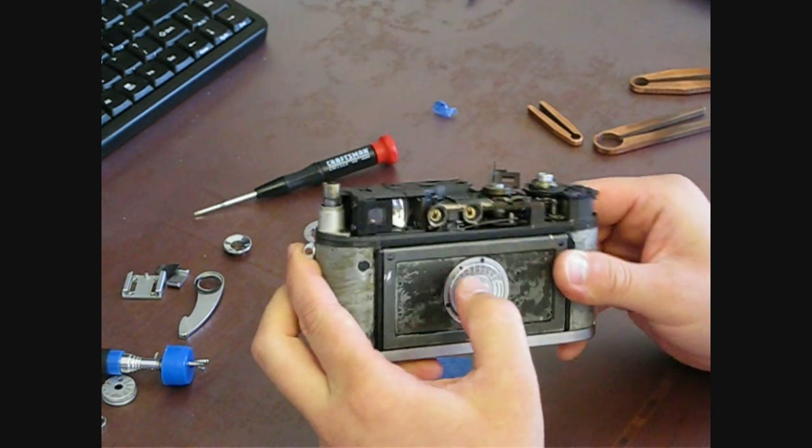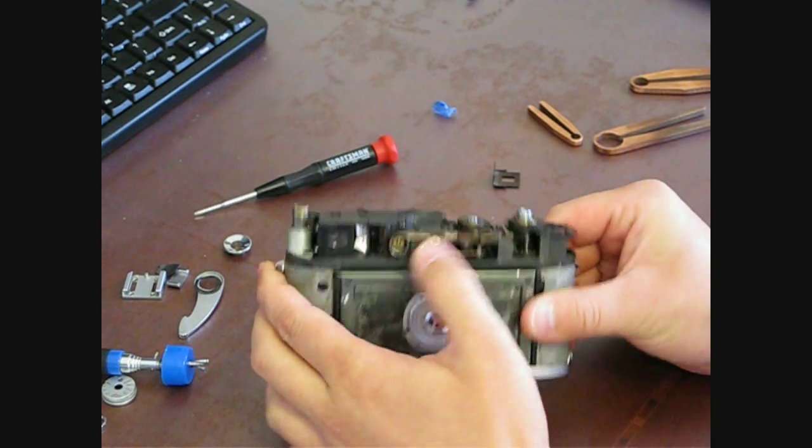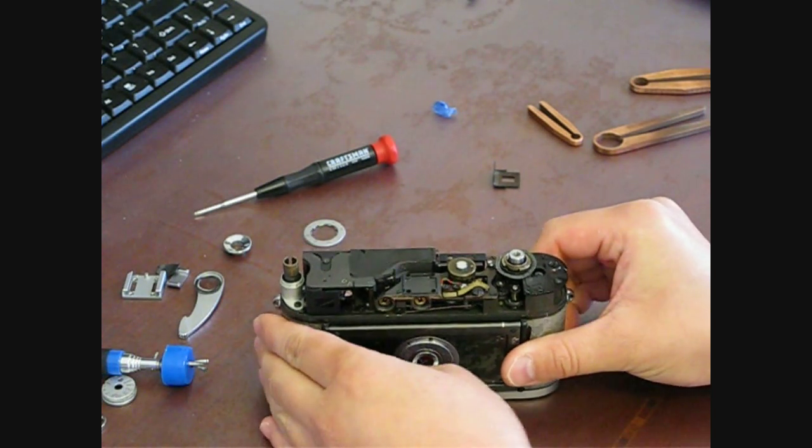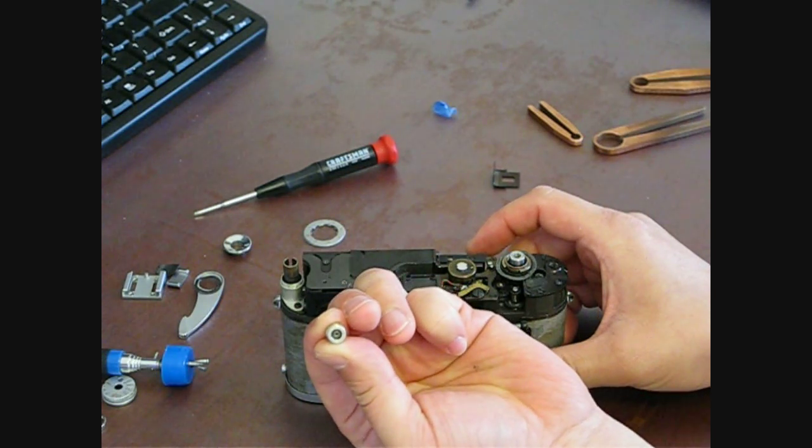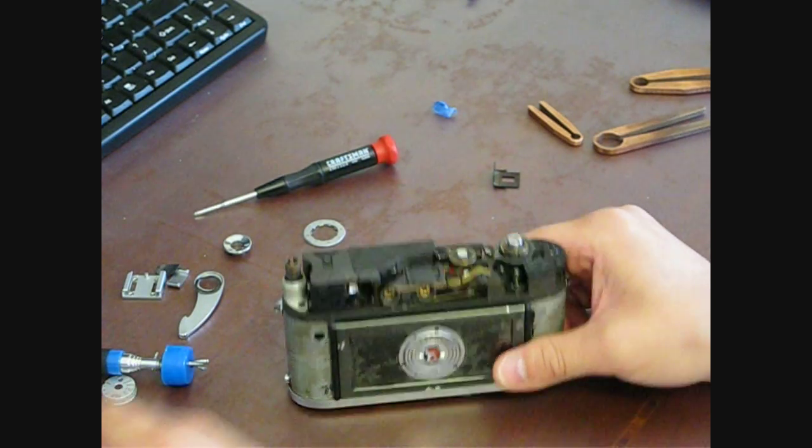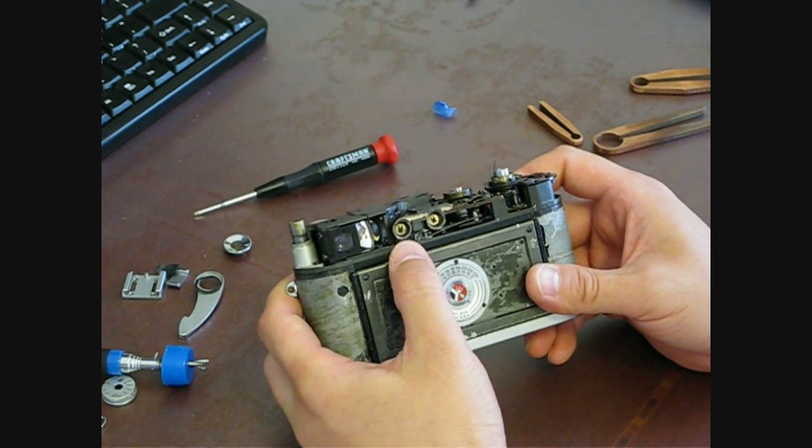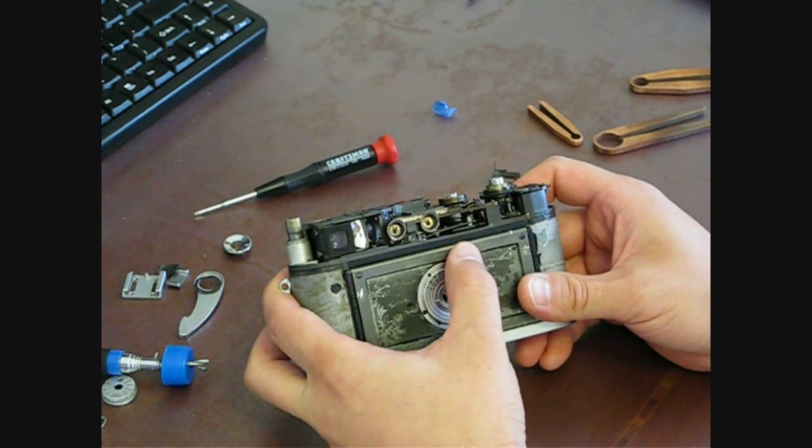The other improvement on this M2 is this cold shoe was outfitted with the PC sink. There you go. Instead of the old bulb sinks. That's much more convenient. And like I said it prevents you from poking your eyes out.